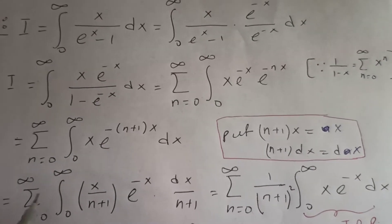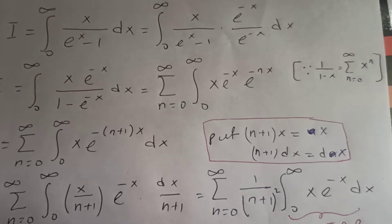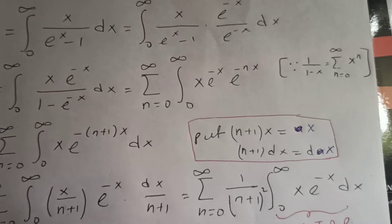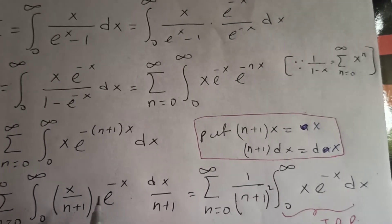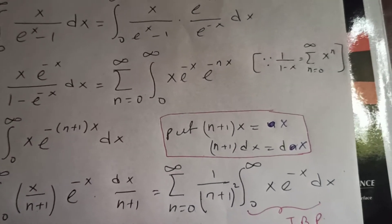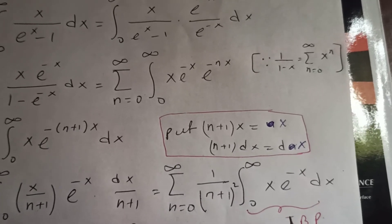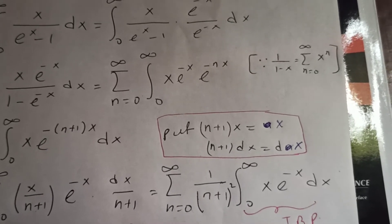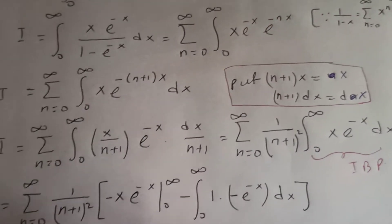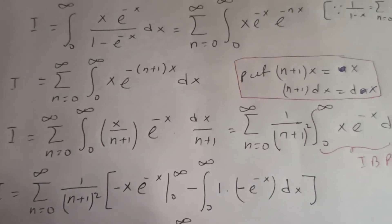So (n+1) comes out twice — once from x and once from dx — giving (n+1) squared in the denominator. We are left with the integral of x·e^(−x). Now we are going to apply integration by parts.